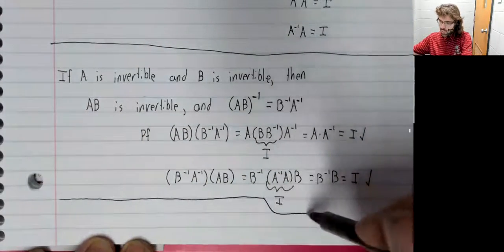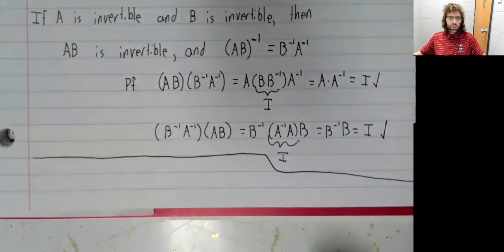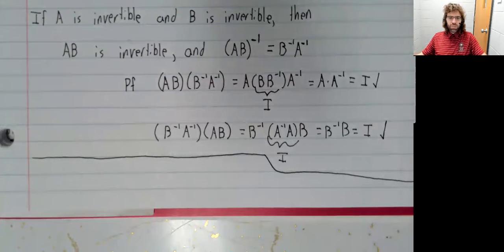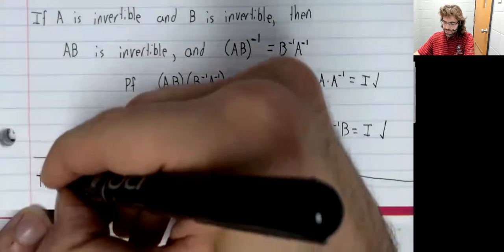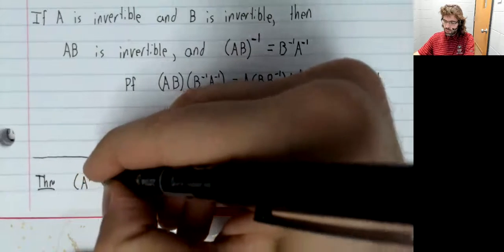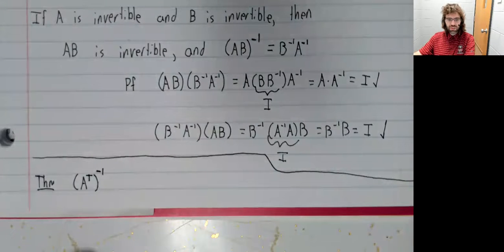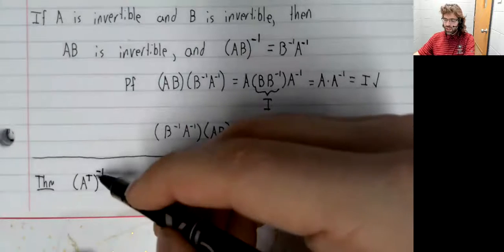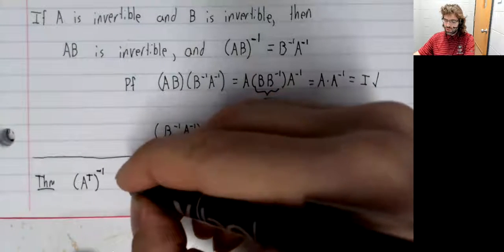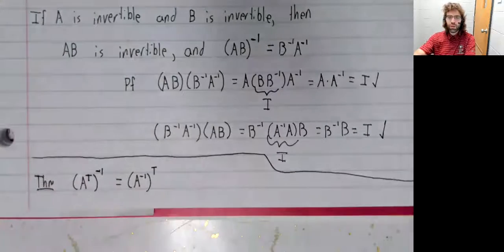I'm just going to squeeze one more theorem in here. And I'm not going to prove it because I already made the observation that we're not going to do a lot with transposes in this class. But one last theorem: If A is invertible, then A transpose is invertible. And the inverse of a transpose is the transpose of the inverse.